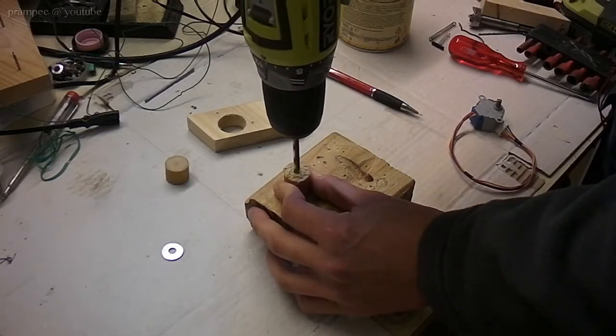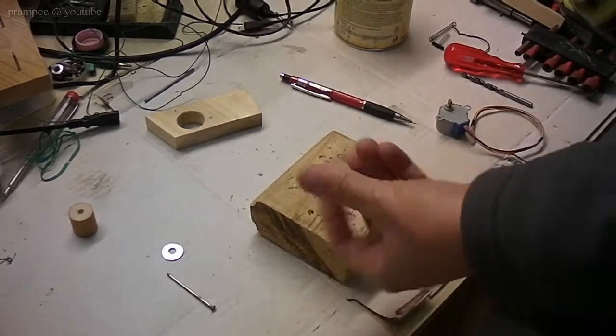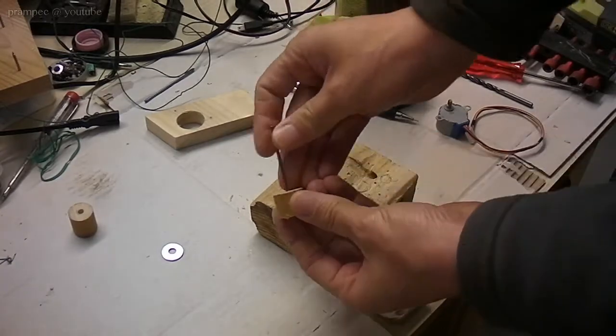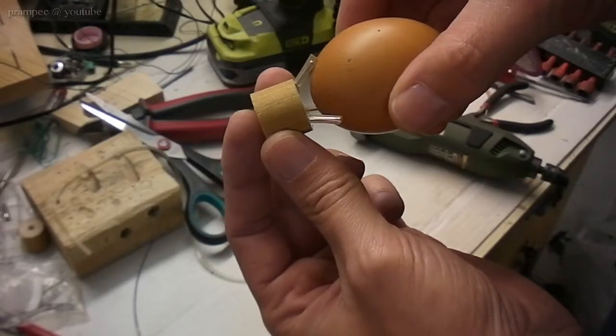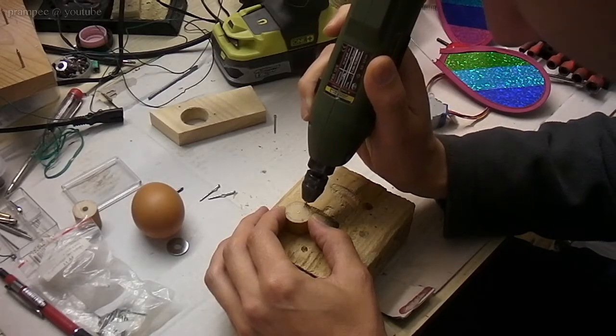One will fit on the end of the motor shaft. The other will be used with a nail. For holding the egg we will need three legs made out of wire. So I drilled three diagonal holes in them.